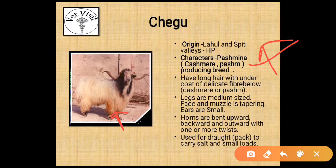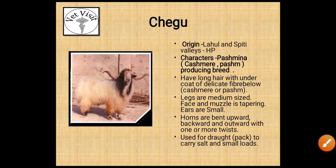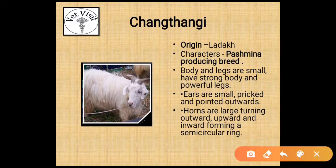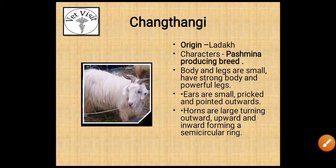Chigu horns are bent backward and outward with one or more twists; used for carrying salt and small loads. The next breed is Changtangi. Its origin is Ladakh. Characters: Pashmina producing breed; body and legs are small but strong and powerful; ears are small, prickled and pointed outwards; horns are large, turning outwards, upwards, and inwards, forming a semi-circular ring.